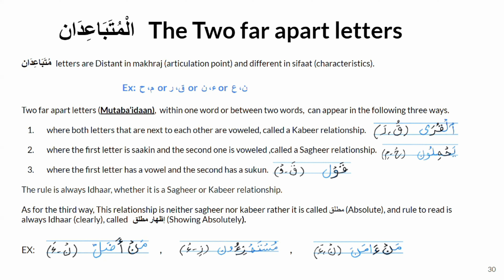In 'mustahzi'un,' letter za and hamza are in a kabir relationship — idhar mutaba'idan kabir. In 'man adhul,' letter noon and hamza are in a mutaba'idan sagir relationship — idhar. When letters appearing next to each other are mutaba'idan letters, whether in sagir, kabir, or mutlaq relationship, the rule is always idhar with no exception. Alhamdulillah, that's all on the topic of the relationship of two letters. I hope this is clear. Jazakum Allahu khairan. Assalamu alaikum warahmatullahi wabarakatuhu.